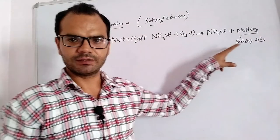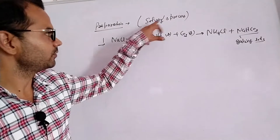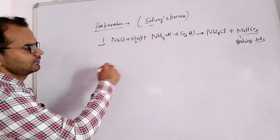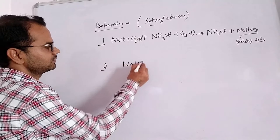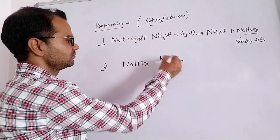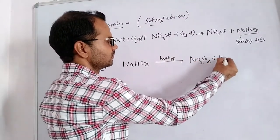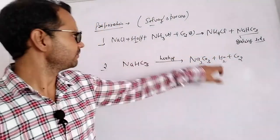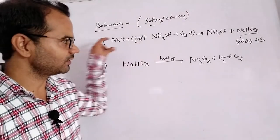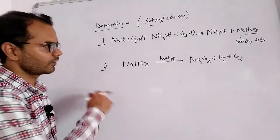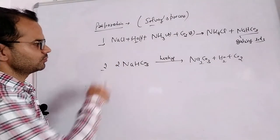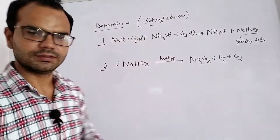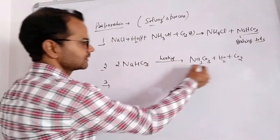So the first product of the Solvay process is baking soda. On heating baking soda, we obtain sodium carbonate (Na₂CO₃) plus water plus CO₂. This CO₂ and water can be reused in step one, making it a continuous process. Two molecules of baking soda are heated to form anhydrous sodium carbonate.